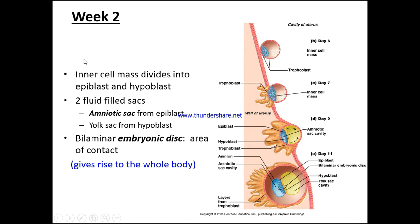In week two, the inner cell mass divides into an epiblast and a hypoblast. Two fluid-filled sacs form: the amniotic sac from the epiblast and the yolk sac from the hypoblast. This creates the bilaminar embryonic disc, which is going to give rise to the whole body. By day seven, the trophoblast starts to invaginate into the wall of the uterus.